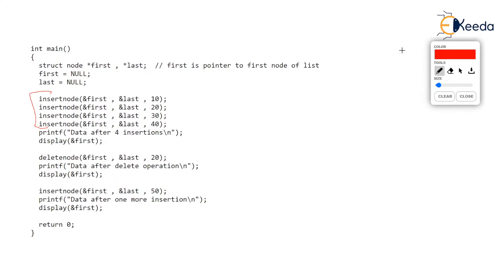Now we would like to display the circular linked list, so we have called a function called display. Notice that to the display function we have passed only the address of first — we don't have to pass last. Our plan is to display the list from first and stop when we get a node whose next pointer is pointing back to first.